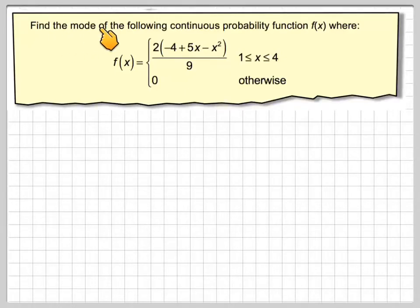Hi, in this video we're going to find the mode of a continuous probability function f(x), where f(x) is 2(−4 + 5x − x²)/9, and it's valid between 1 and 4 only.